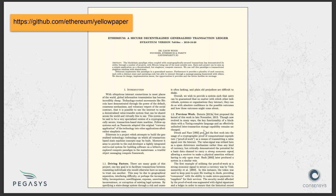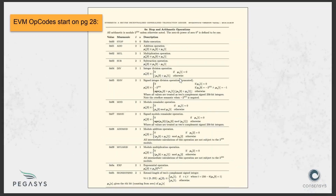The Ethereum Yellow Paper is a technical paper that describes how the Ethereum protocol works — the EVM, the opcodes, and all the specifications of the Ethereum blockchain. These are some EVM opcodes and their values: ADD, MUL (multiply), SUB, DIV, SDIV, MOD, ADDMOD, and many more.